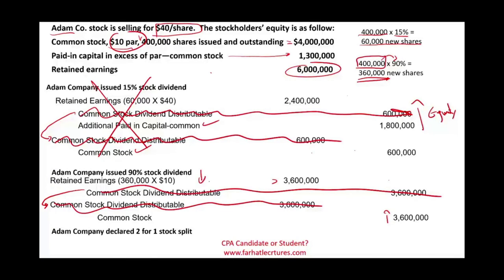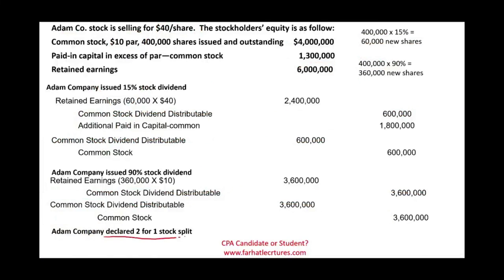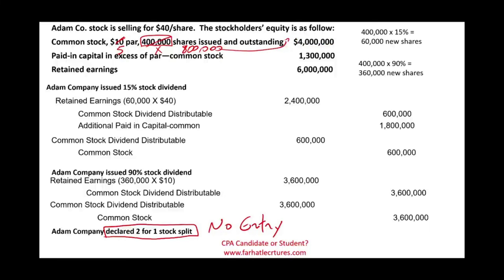We reduced an equity account and increased an equity account — no overall effect. Now, Adam Company declared a two-for-one stock split — what is the journal entry? No entry. All we do is declare two-for-one: if you have one stock, you now have two. The outstanding shares go from 400,000 to 800,000. Because we doubled the shares, we cut the par value in half — so it becomes $5 times 800,000, still equaling $4 million in common stock. The company will issue a memo.